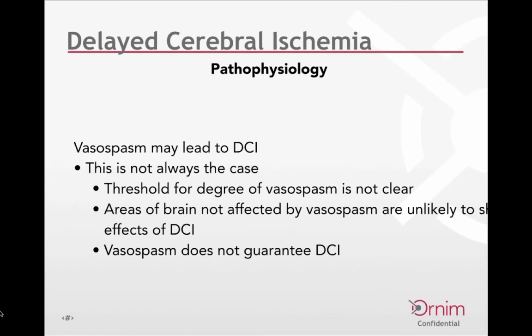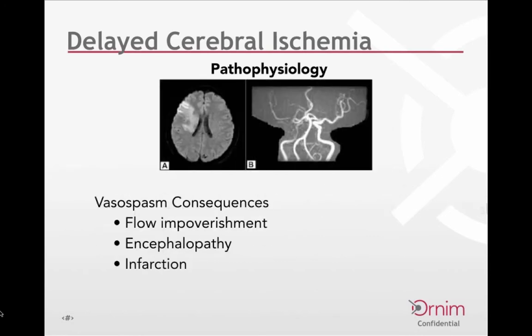Delayed cerebral ischemia is the present problem we're talking about tonight. DCI is a complex process that is the ultimate result of vasospasm. Vasospasm may lead to delayed cerebral ischemia, but this is not always the case. The threshold for the degree of vasospasm required to lead to DCI is not clear. There are areas of the brain somewhat preferentially affected, and vasospasm does not necessarily guarantee DCI. We're still working out the sensitivity and specificity of various diagnostic modalities.